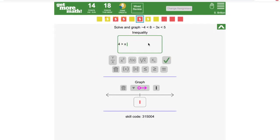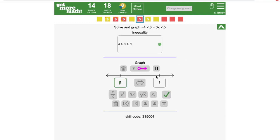Next, let's graph a compound inequality. When I solve this inequality, Get More Math automatically puts the values onto the number line, but I still need to make sure that they're in the right order, with the smaller value on the left.